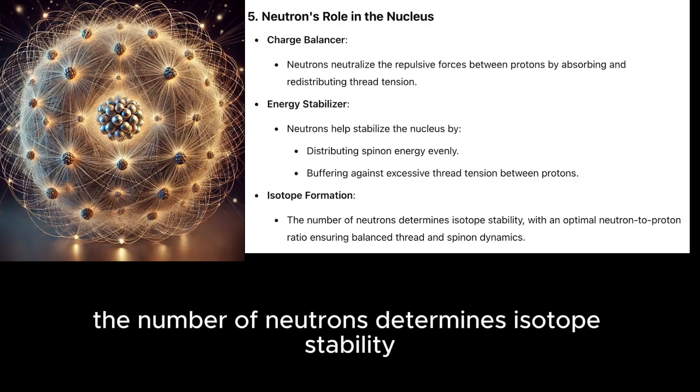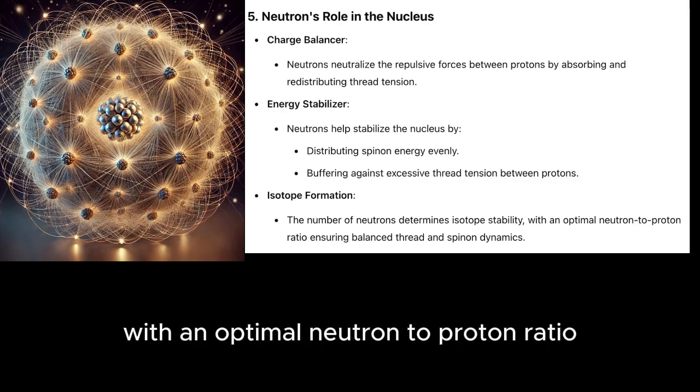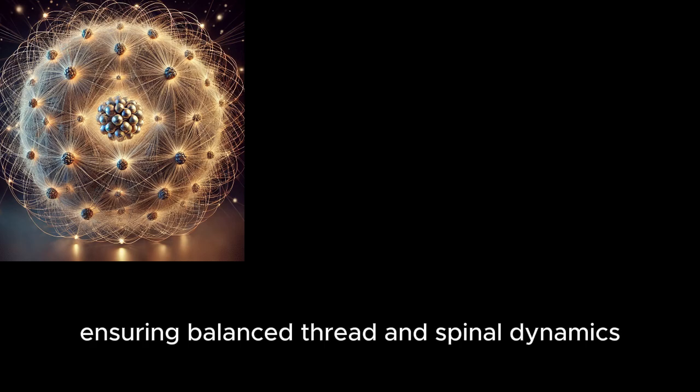Isotope formation. The number of neutrons determines isotope stability, with an optimal neutron to proton ratio ensuring balanced thread and spinon dynamics.